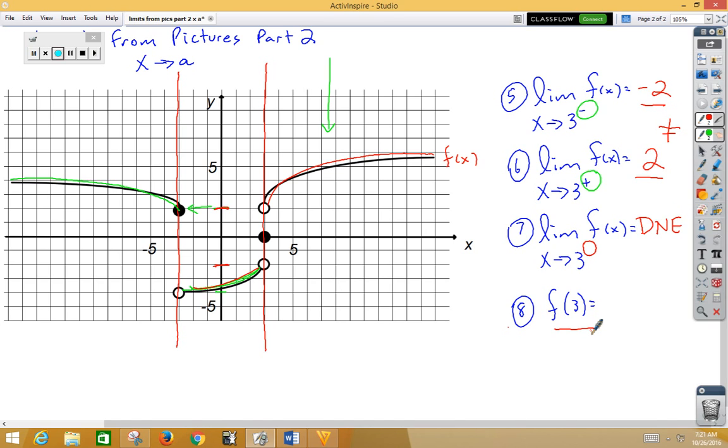Lastly, algebra 1 question, when x is 3, what is y? So we are again looking for the closed circle. Here our closed circle is clearly at y is 0.